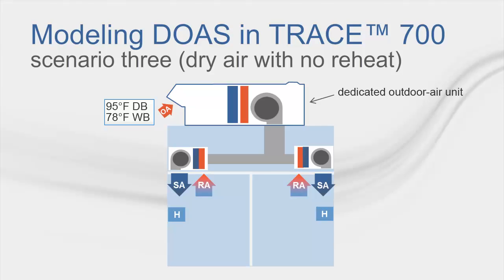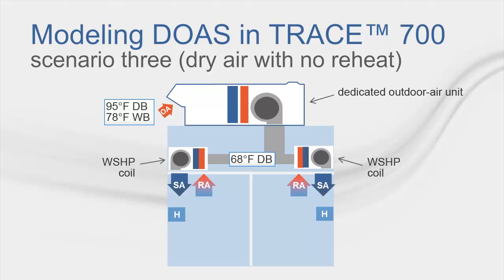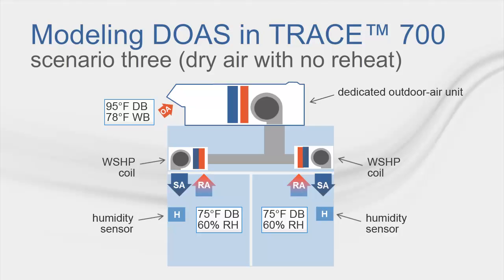For our final scenario, let's consider the same building with water source heat pumps. During the cooling season, the DOA dehumidifies the outdoor air to a 52-degree dew point; however, in this scenario we are not reheating that air to room neutral temperature. During the heating season, the DOA heats the outdoor air to 68 degrees Fahrenheit. Additionally, this building has a system-level controller that uses humidity sensors in the rooms and resets the dew point leaving the DOA up to 60 degrees dew point, preventing relative humidity in the worst-case room from rising above 60% while minimizing energy usage — optimizing the supply dew point to meet dehumidification requirements.